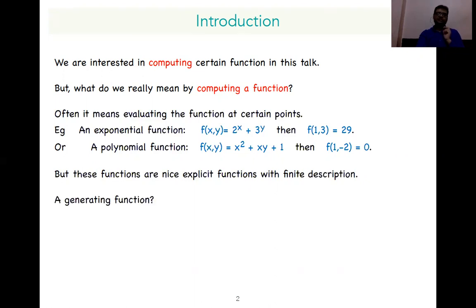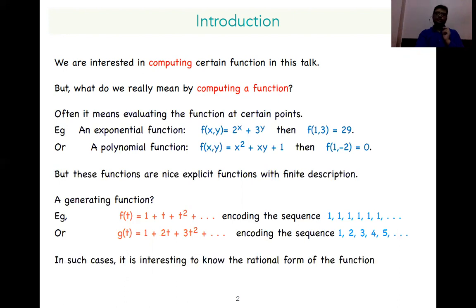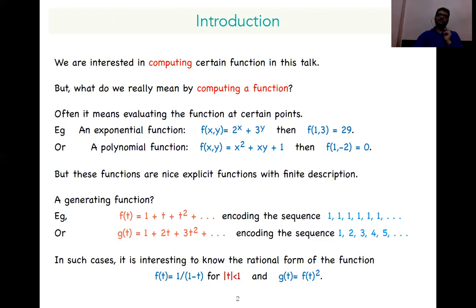For example, a generating function is a function which has infinite terms, like the example we see here, which encodes the sequence 1, 1, 1, 1, etc. If you want to evaluate this function at t equal to 1/2 by direct method, then it is infeasible. Similarly, we can see another example which encodes an arithmetic progression. In these cases, it is more interesting to compute the rational form of these functions, because if you have that rational form, then evaluating is just a trivial task. This function f has a rational form, and g is also a rational function for some feasible values of t.